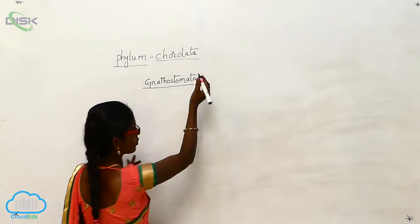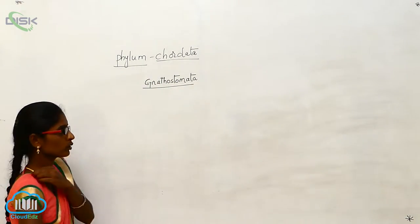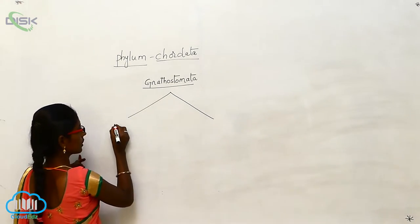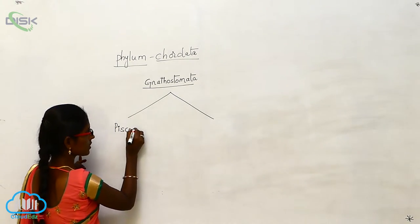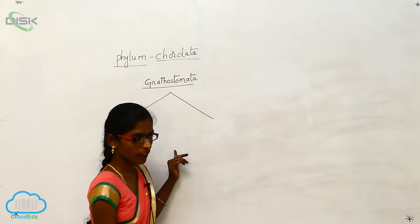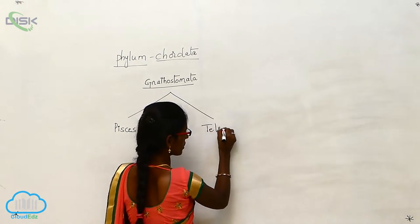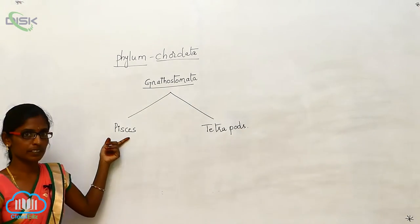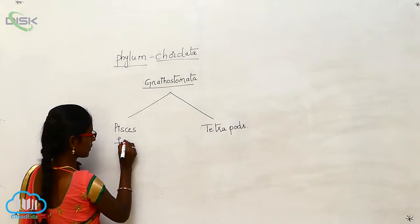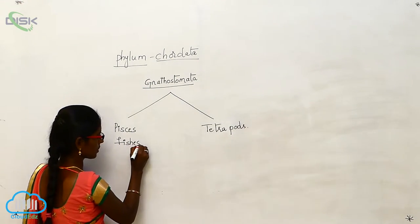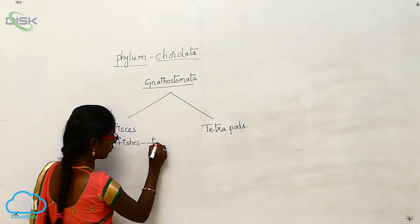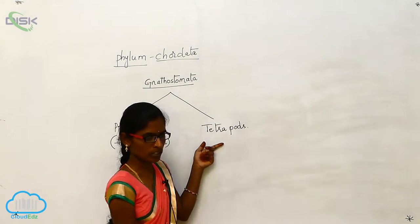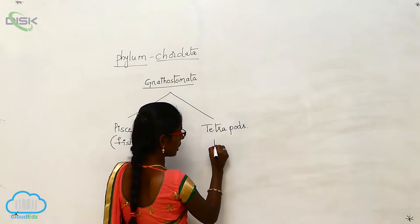Gnathostomata includes two subclasses: Pisces and Tetrapods. Pisces includes fishes, and these have fins. Tetrapods have limbs.